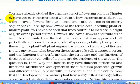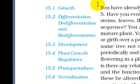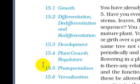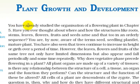Plant Growth and Development, Chapter 15. The chapter covers the following topics: 15.1 Growth, 15.2 Differentiation, De-differentiation and Redifferentiation, 15.3 Development, 15.4 Plant Growth Regulators, 15.5 Photoperiodism, and 15.6 Vernalization.